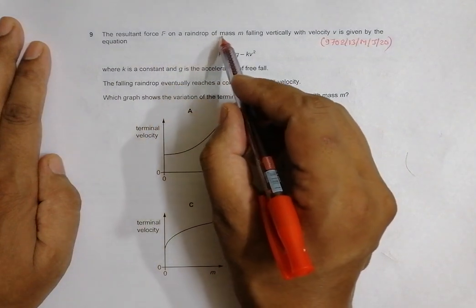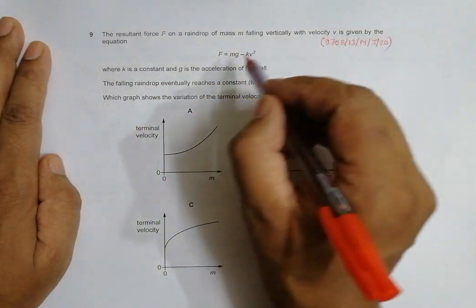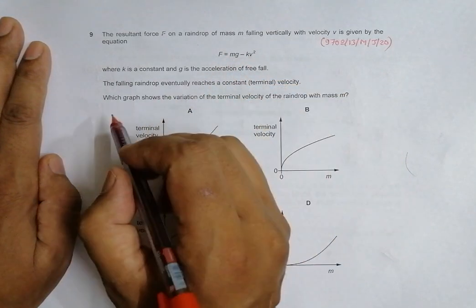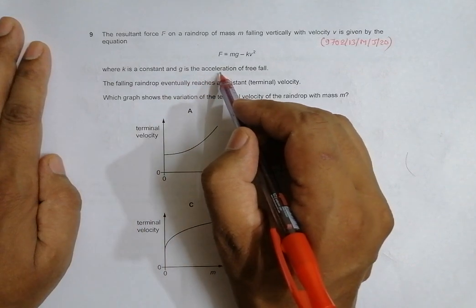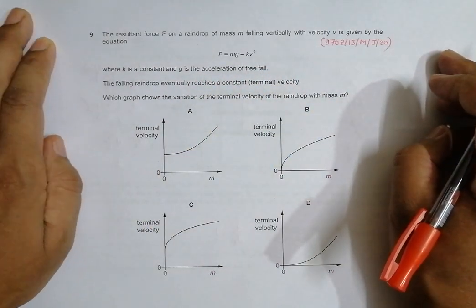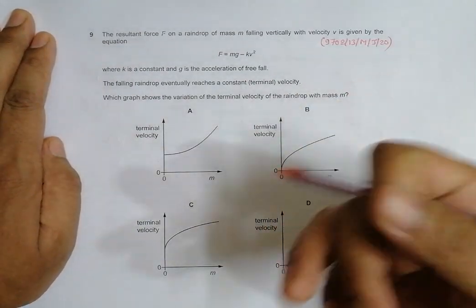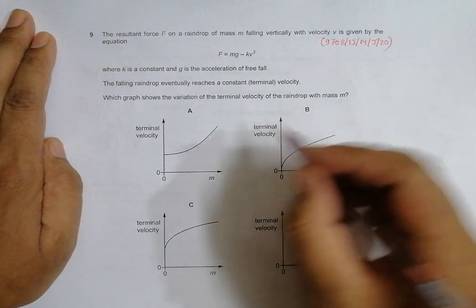The resultant force F on a raindrop of mass M falling vertically with speed V is given by the equation F equals mg minus kV squared, where k is a constant and g is the acceleration of free fall. This is concerned about the existence of opposing forces, which could be viscous force, drag force, or the sum of both.